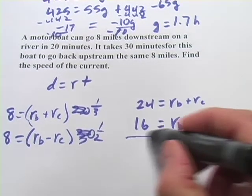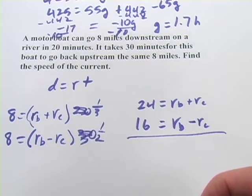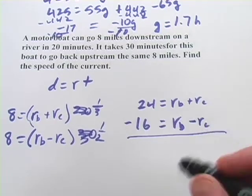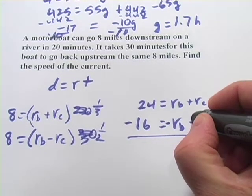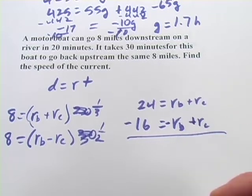And then this looks like a pretty good place to do elimination. We want to find the rate of the current, though. So I think what I'll do is multiply this one by negative 1, and then we'll be eliminating the rate of the boat.